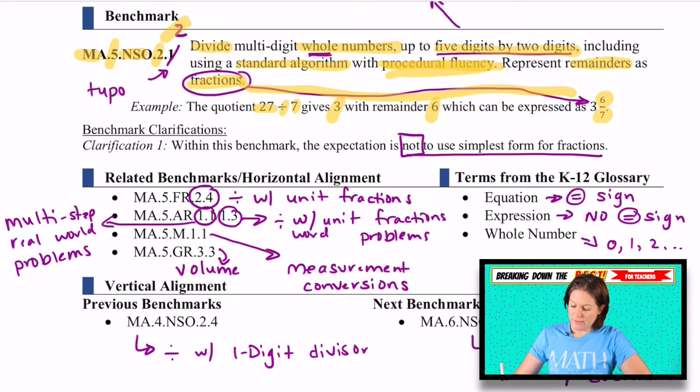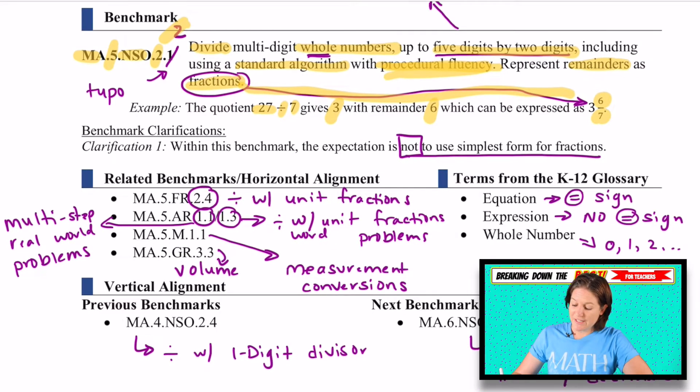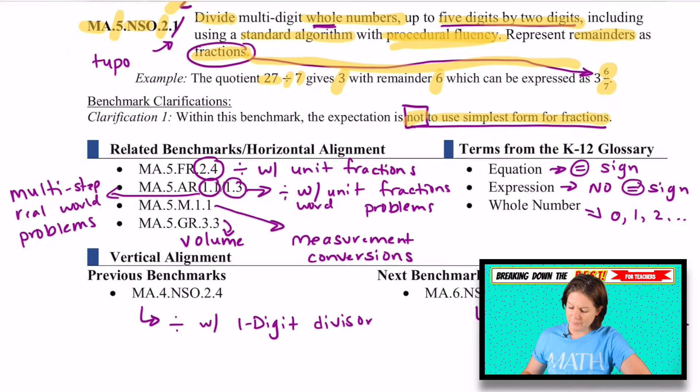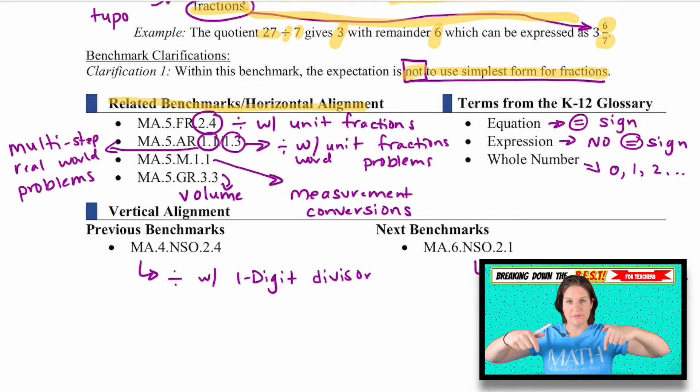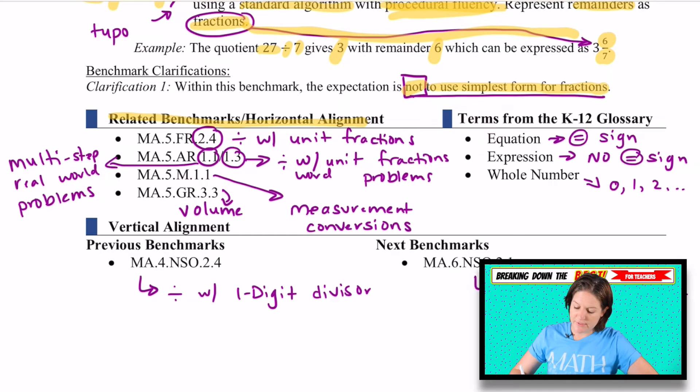It says within this benchmark, the expectation is not to use simplest form of fractions. So they do not have to use the simplest form of fractions, but can you talk about it? Absolutely. And then for the related benchmarks and horizontal alignment, these are other benchmarks in fifth grade at the horizontal level that this standard, this division standard will impact. It aligns with those.